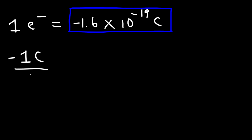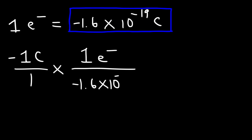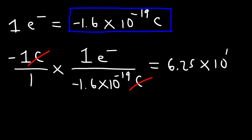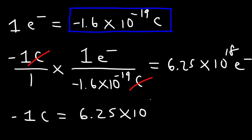To find this answer, we need to convert coulombs to electrons. One electron has a charge of negative 1.6 times 10 to the negative 19 coulombs. So you set this up such that the unit coulombs cancels. If you take negative 1 and divide it by negative 1.6 times 10 to the negative 19, you get 6.25 times 10 to the 18 electrons. So one coulomb of charge represents this many electrons.